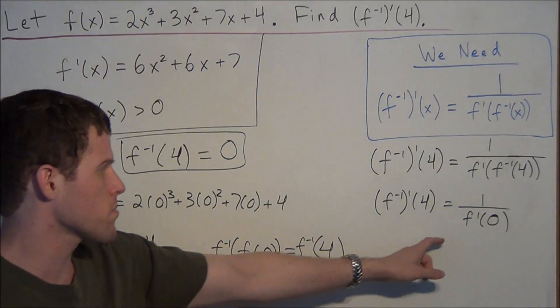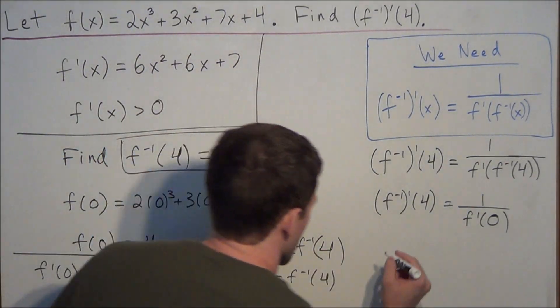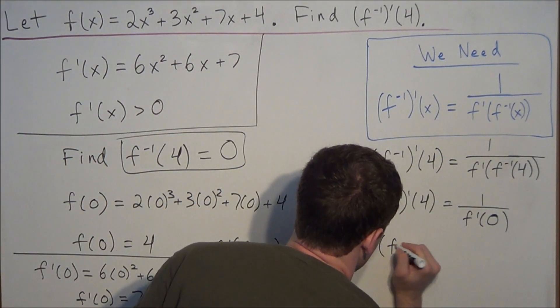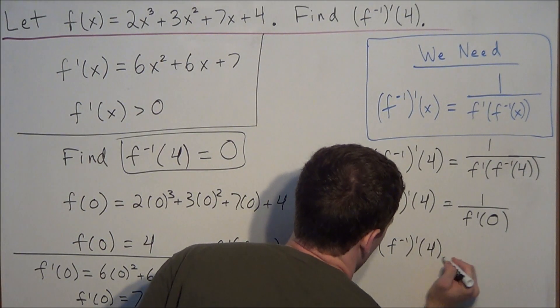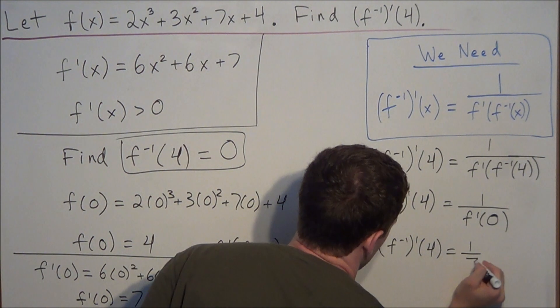So now for the last piece, we can replace f prime of 0 with 7, and this tells us our final answer: the derivative of the inverse evaluated at 4 is equal to 1 over 7.